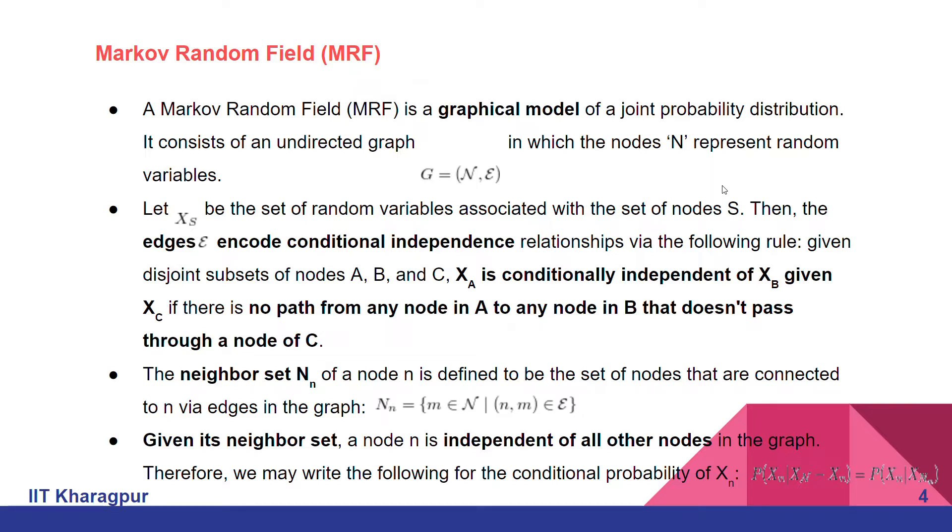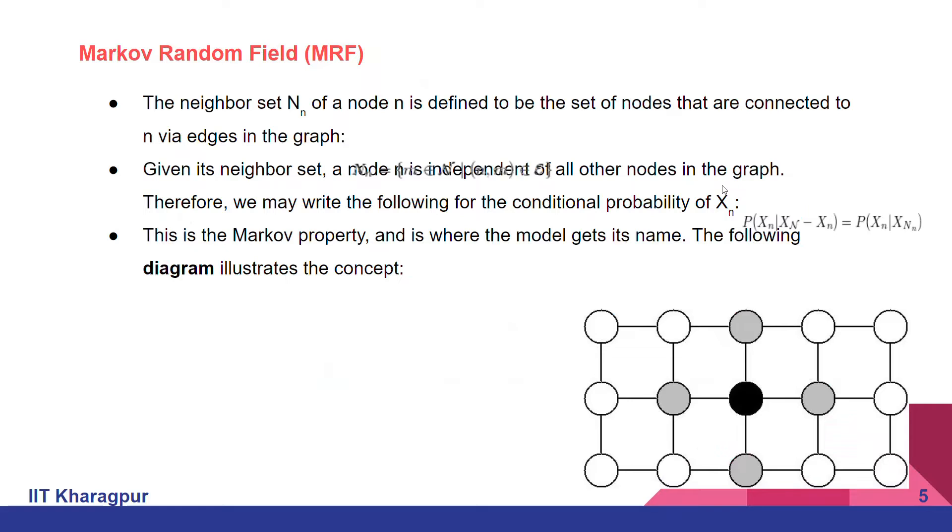Also, given the neighboring set of nodes for any node N, that node is independent of all the other nodes in the graph. These properties of Markov random field can be illustrated using the diagram shown at the bottom left corner.